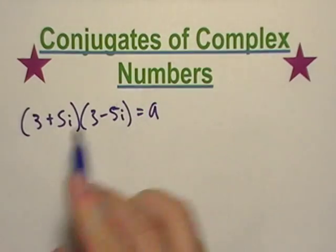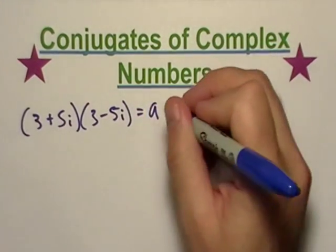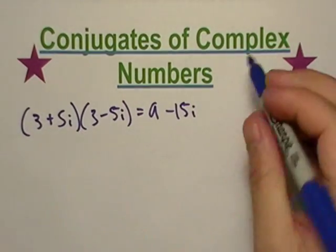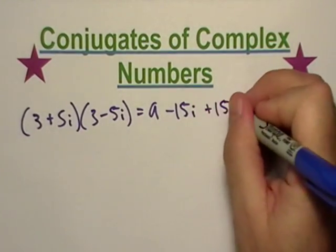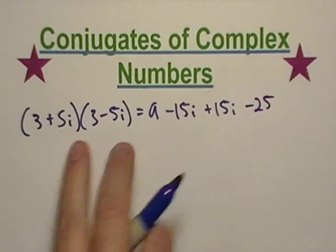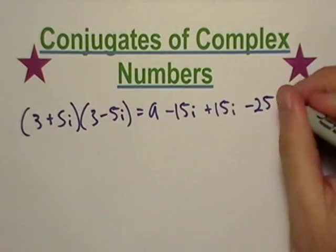I do the FOIL method, I get a 9, and I get a negative 15i. Now I do my middle term, I get a positive 15i. Then I get a negative 25, but they both have i's, so it's i squared.